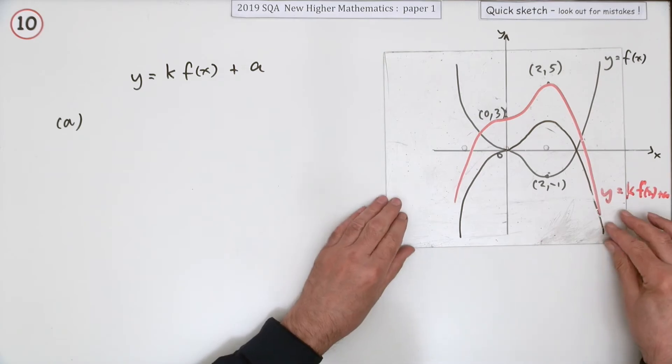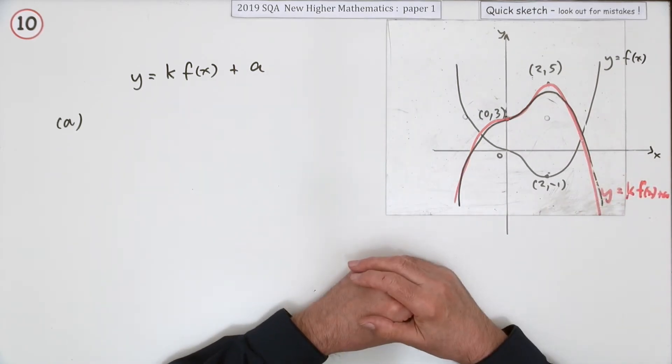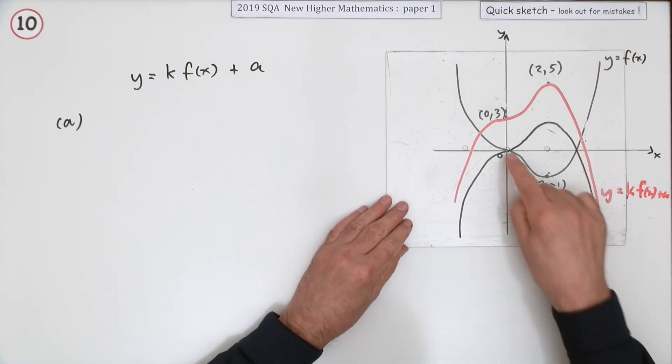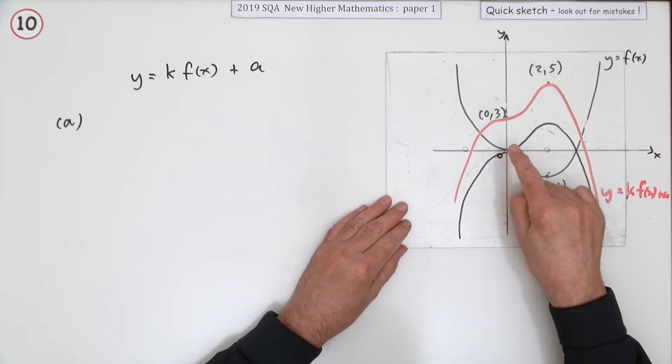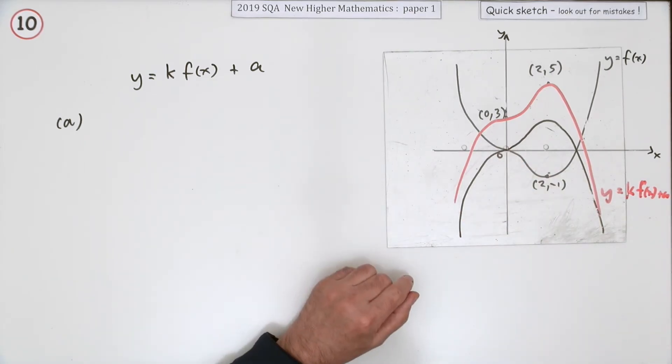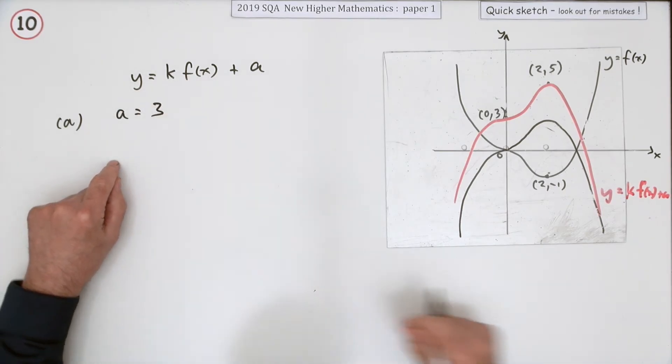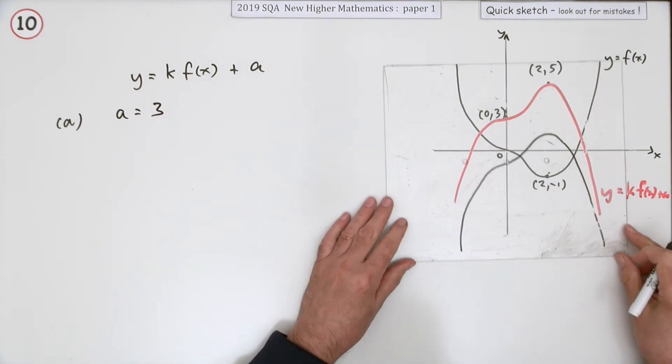Now the fact that the origin here moves up to there tells you straight away how much it's been moved up, because the multiplication wouldn't affect the y-coordinate there. That was zero to begin with. So you know straight away that a must equal three. The whole thing was lifted up three.